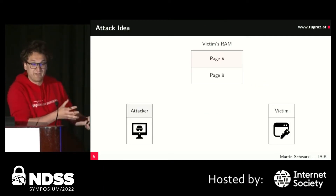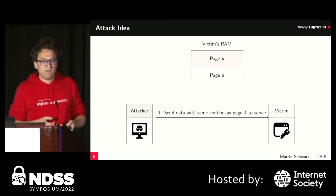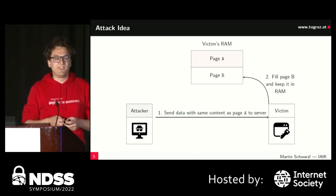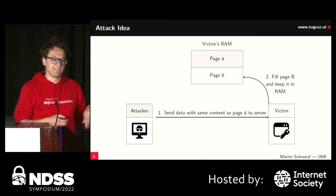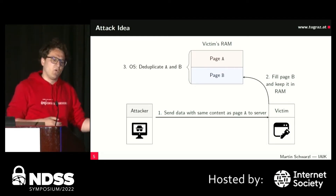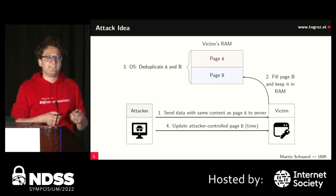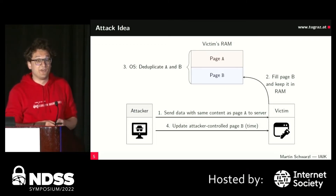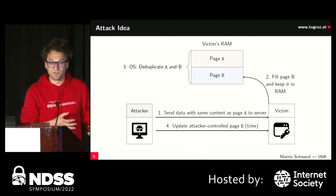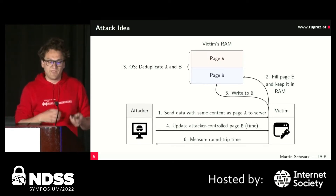How do we map this to a remote setup? The idea is to have a public API that allows storing and replacing data. The attacker first sends some data; there is an in-memory cache like Memcached or a web request pool running. The service fills the page, the OS deduplicates it, the attacker forces an update request and measures the round-trip time. Depending on whether the guess was correct, we see a significant timing difference for pages under copy-on-write semantics or not.